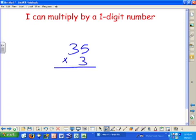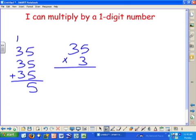Now we have 35 groups of 3 or 3 groups of 35. 5 plus 5 plus 5 is 15. 3 plus 3 plus 3 is 9, plus 1 is 10.